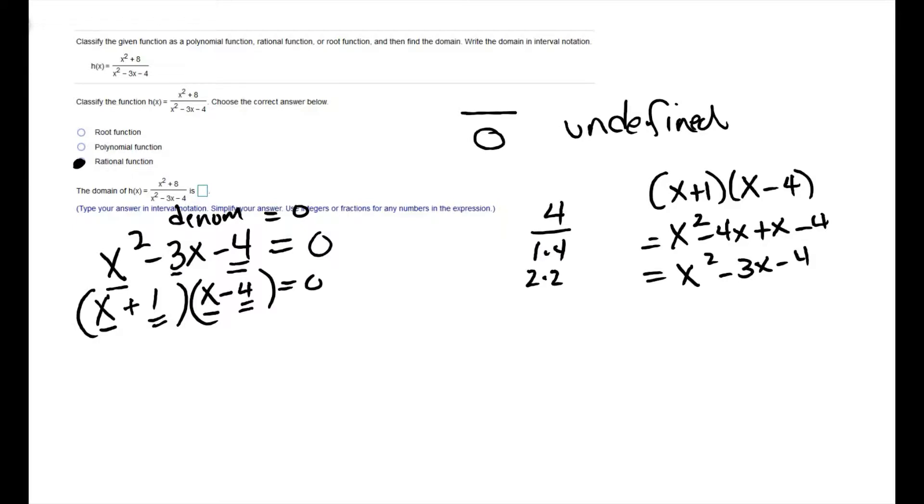Once you've got it factored, then you're going to set each factor equal to zero. That's using the zero product property. And if I subtract 1 on both sides, I'm going to get x equals negative 1. Add 4 on both sides, I get x equals 4.